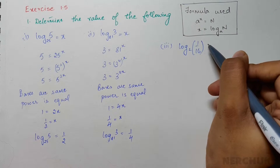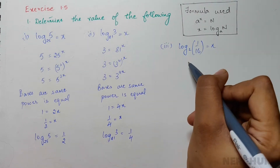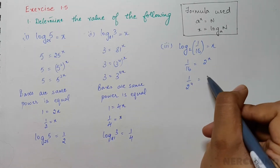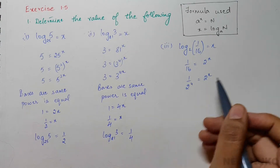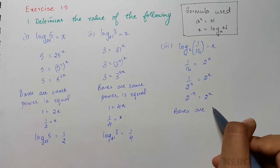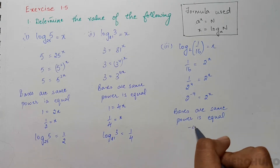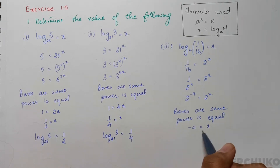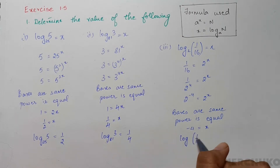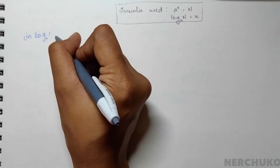We let the expression equal x and apply logarithm to exponential conversion, giving 1/16 equal to 2 to the power x. Now 1/16 can be written as 1 by 2 to the power 4, which equals 2 to the power minus 4. So 2 to the power minus 4 equals 2 to the power x. Therefore x equals minus 4, and log of 1/16 to base 2 equals minus 4. For the fourth bit we have log 1 to base 7; let us set this equal to x.